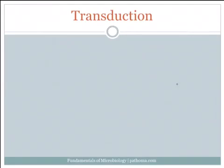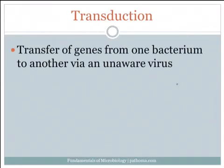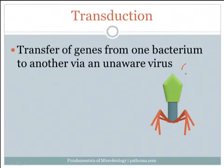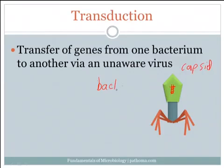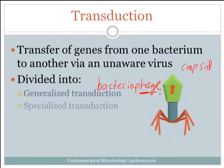The final way that bacteria increase their genetic variation is through a process called transduction — the transfer of genes from one bacterium to another via an unaware virus. Viruses are essentially divided into two components: the outer layer called a capsid, and what's on the inside, which is the virus's genetic information, either in the form of DNA or RNA. Another name for viruses that specifically infect bacteria are called bacteriophages, or phage for short. There are two types of transduction: generalized transduction and specialized transduction.